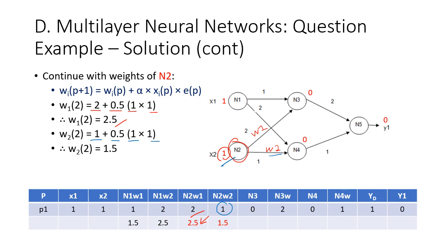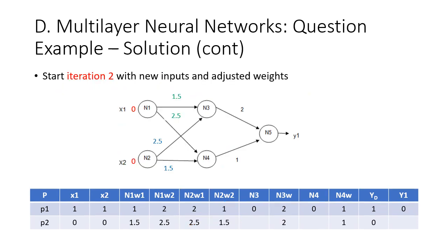We now start iteration two with new input and the adjusted weights. The new input comes from the training data: x1 equals zero and x2 equals zero, with the desired output being zero. We have brand new weight values from the previous training, and we now need to calculate the values for neurons three, four, and five again to finish iteration two.